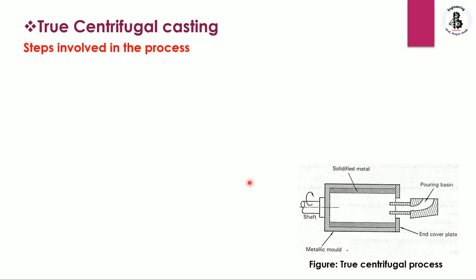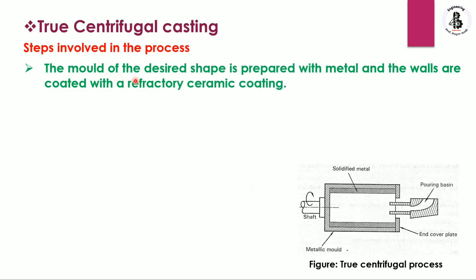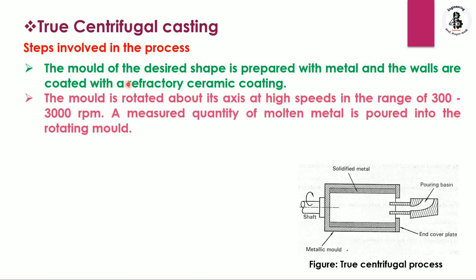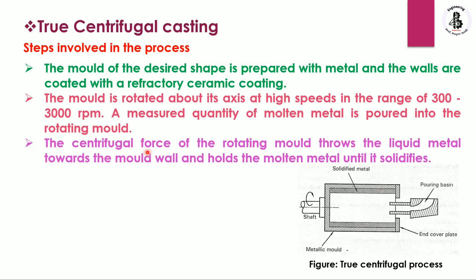The various steps involved in this process are: first, a mold of desired shape is prepared in metal and the walls are coated with a refractory ceramic coating, which also provides good accuracy and precision. The mold is rotated about its axis at high speed, in the range of 300 to 3000 rpm. A measured quantity of molten metal is poured into the rotating mold, based on the required shape, size, and thickness of the job. The centrifugal force of the rotating mold throws the liquid metal towards the mold walls and holds it until it solidifies.